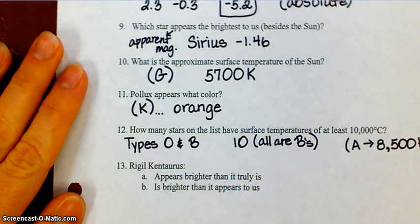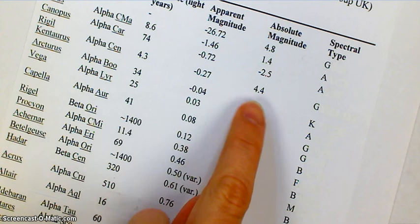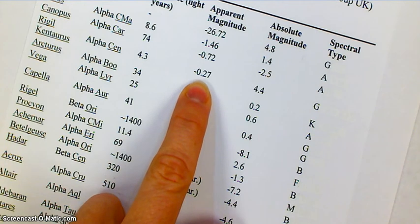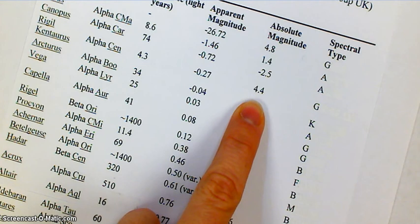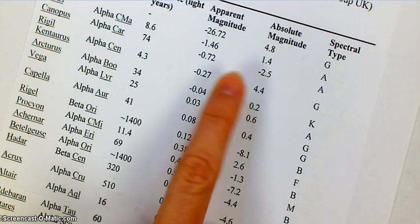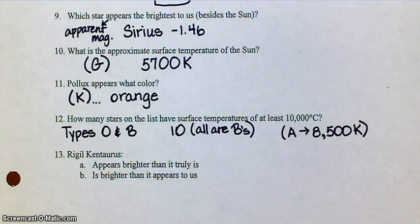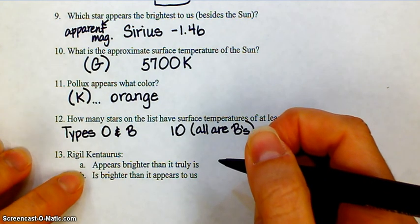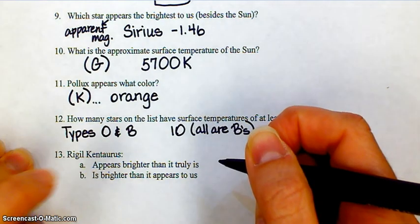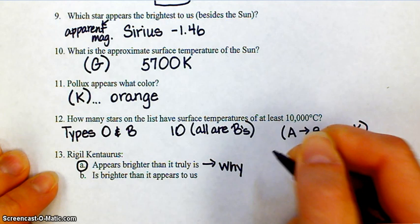The last question is asking about the star Rigel Kentaris, which is up towards the top of the list — right here, 4.3 light years away, so we've already talked about it. The apparent magnitude of Rigel Kentaris is negative 0.27 and its absolute magnitude is 4.4. What this tells us is that it seems to us that it's fairly bright, but it's actually not that bright. So if it seems bright but it's not that bright, then it's probably because it's fairly close to us — and it is. Remember, it's only 4.3 light years away. Does it appear brighter than it truly is, or is it brighter than it appears? The lower number was the apparent magnitude, so it appears brighter than it truly is — because it's only 4.3 light years away.